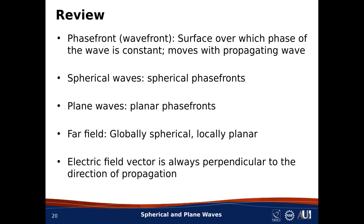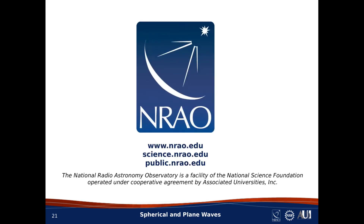Let's wrap up by reviewing the main points. A key point has been the concept of the phase front — a surface over which the phase of the wave is constant and which therefore moves with the wave as it propagates. We've introduced spherical waves, which is a pretty good description of the nature of most waves transmitted by sources, but which are only apparent as spherical when viewed from a global vantage point. We've introduced the concept of plane waves, which describe the nature of waves as perceived locally by an observer who is far from the source. We've pointed out what it means to be in the far field — far enough from the source that the wave appears locally planar, despite being globally spherical. Finally, regardless of whether the wave is spherical or planar, the electric field vector is always perpendicular to the direction of propagation. That concludes this talk on spherical and plane waves. Thanks for listening.